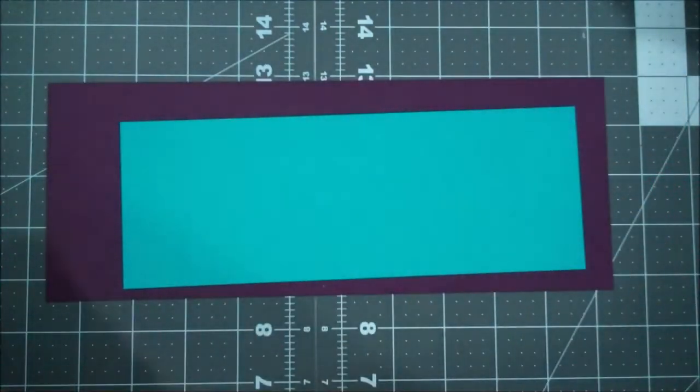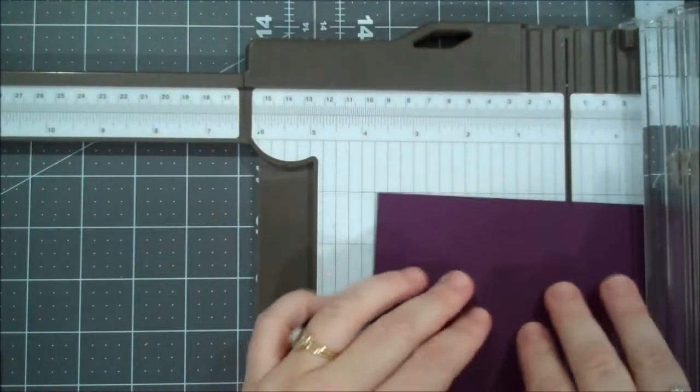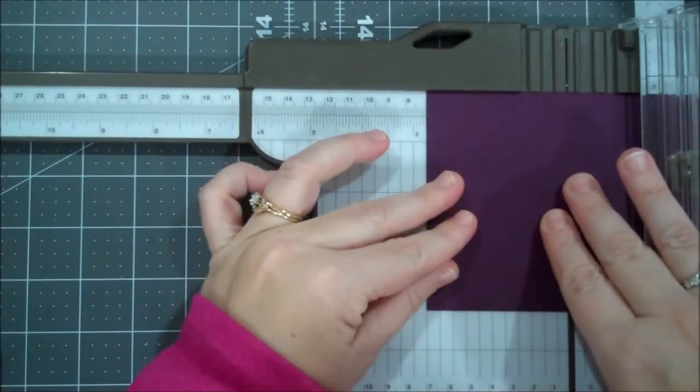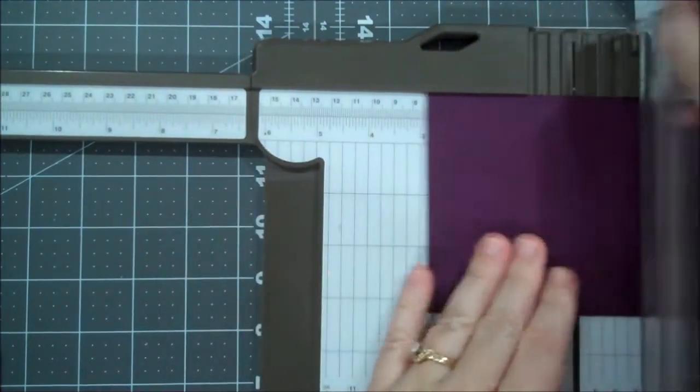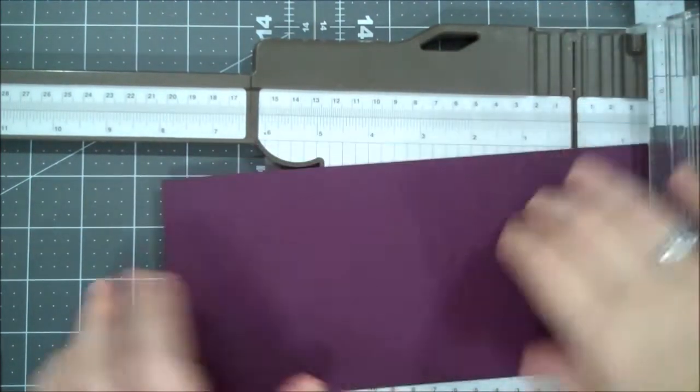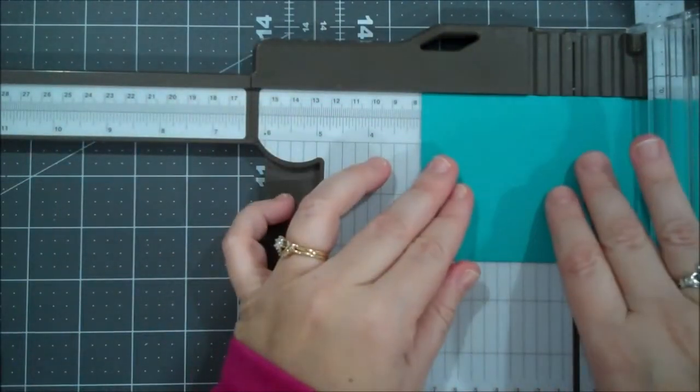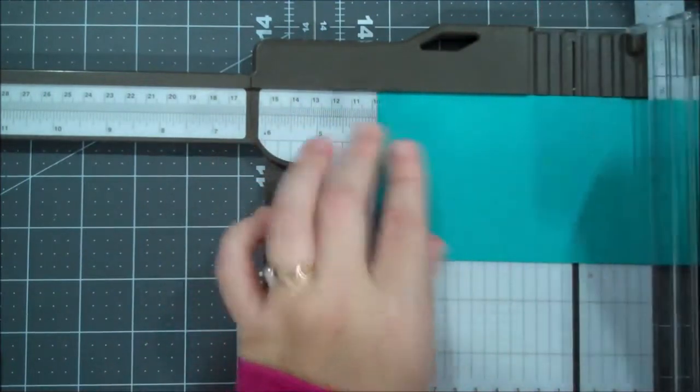Let me grab my trimmer and let's do our scoring first. On the Blackberry Bliss piece we are going to score at two and three quarters and five and a half. And then on our Bermuda Bay piece we are going to score at three and six.